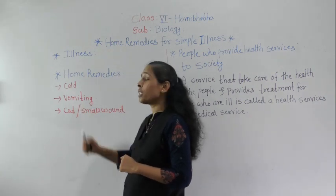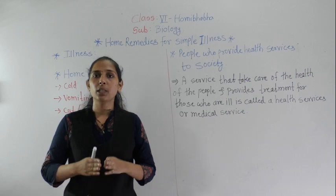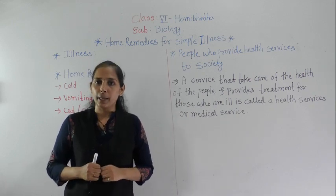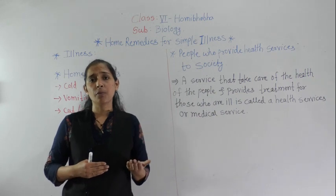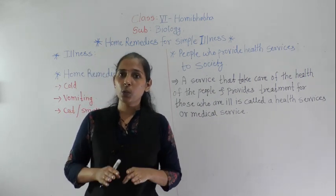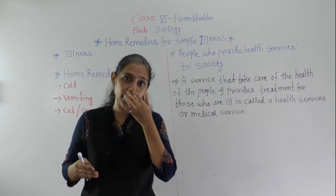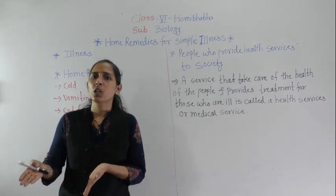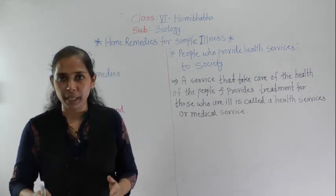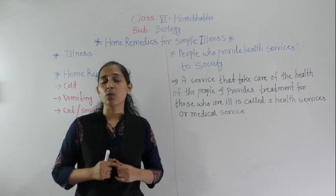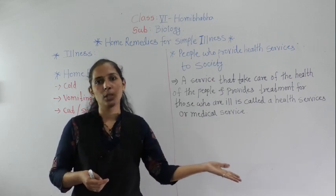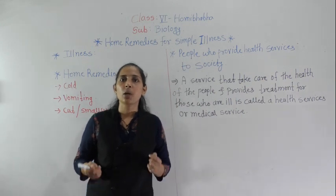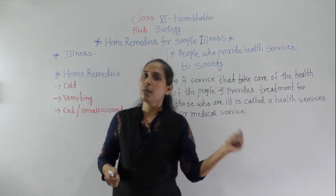The next remedy is for vomiting. If someone is having vomiting due to fever, change in food, food poisoning, or indigestion, then instead of forcing that person to eat, make sure the person doesn't eat anything for a while, and give them lemon sherbet. It will work properly on vomiting too. But if the vomiting still doesn't stop, we have to go to the doctor. Same for cold — if you try these remedies for two or three days and still don't feel okay, you should go to the doctor.